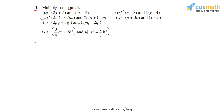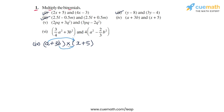Next we come to part four, in which we have to multiply A plus 3B with the second binomial x plus 5. We apply the distributive law: multiply A with x plus 5, and multiply 3B with x plus 5. So we expand this as A into x plus 5, plus 3B into x plus 5.